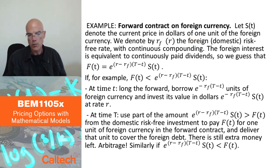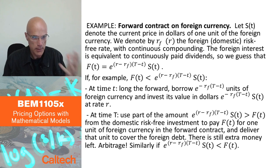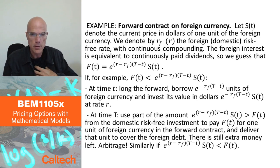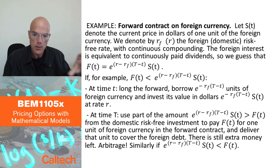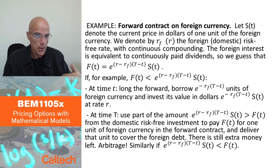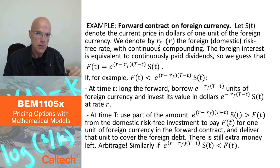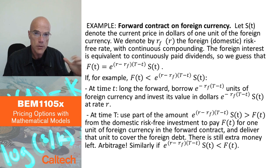Here is the intuition. I'm going to think of the foreign currency as a risky asset — it's like a stock. From the point of view of the dollar investor, the euro is a risky asset: it's fluctuating in a risky way, you cannot predict what it's going to do. But it's an asset which pays dividends, because if you hold euro in a euro bank, you will get RF — you will get some interest. So it's really like a risky asset which pays continuously compounded dividends at rate RF.